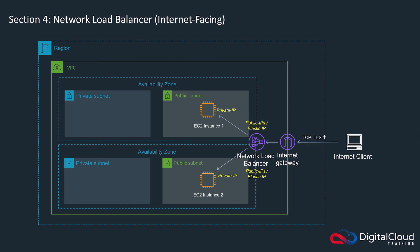You can only use TCP and TLS. Of course HTTP runs on TCP, so you can still have web applications running on your EC2 instances and publish them using port 80 or port 443. The difference is that there's no application layer inspection happening on the network load balancer, so some of the features of the application load balancer aren't possible here, such as the path-based routing and the host-based routing that you saw with the ALB.